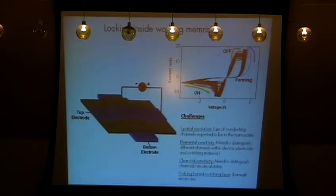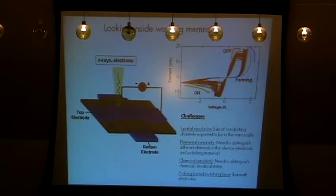So some of the challenges for physical characterization are: we need very nice spatial resolution, we expect conductive channels to be in the nanoscale. We've got a number of different materials in these devices, the electrode material, the switching material, so we want to be able to distinguish these materials from each other. And not only that, we want to know the chemical state of the material. And then finally, if we want to do a non-disruptive measurement, we're going to have to be able to look below these top electrodes, for example. And so what I'm going to describe is doing this using X-rays and electrons, so just basically focused X-rays and focused electrons to interrogate these kind of devices.